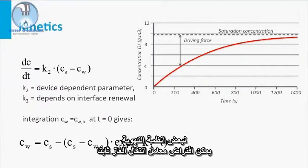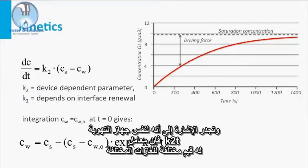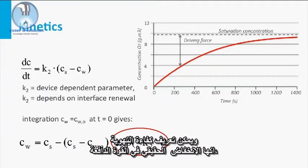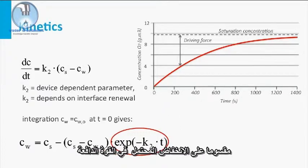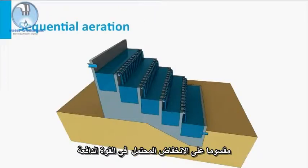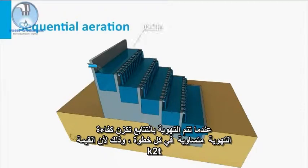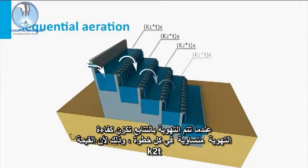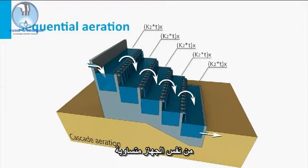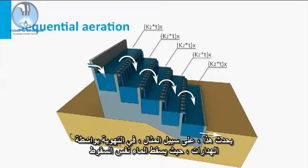For a certain aeration system, the gas transfer coefficient can be assumed to be constant. It should be noted, though, that an aeration device has different k2t values for different gases. The efficiency of aeration can be defined as the achieved decrease in driving force, divided by the possible decrease in the driving force. When aerating sequentially, the efficiency will be equal per step, because the k2t value of the same device is equal. This occurs, for example, in aeration with cascades.